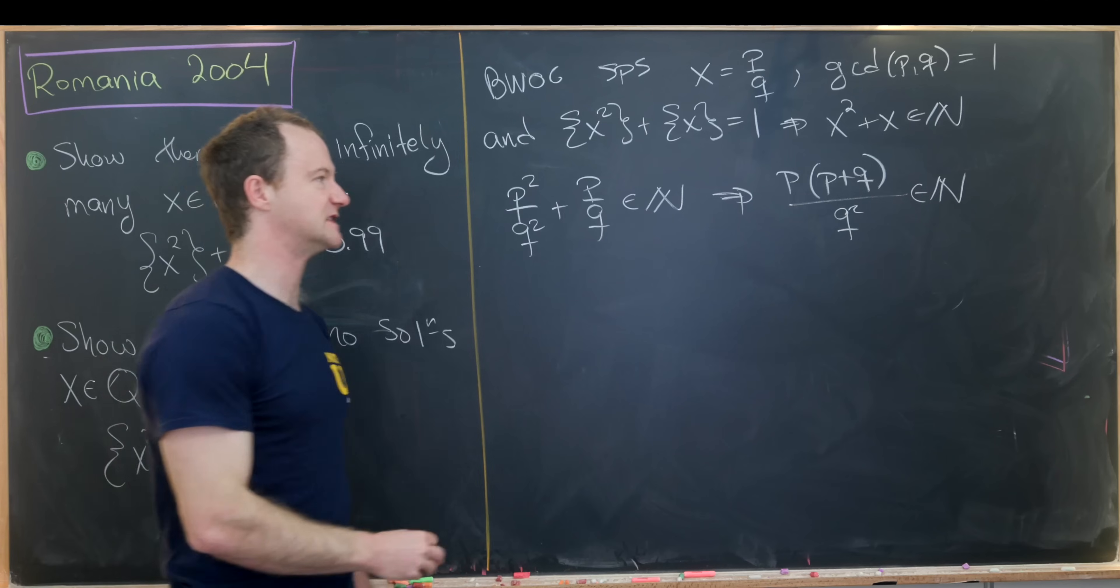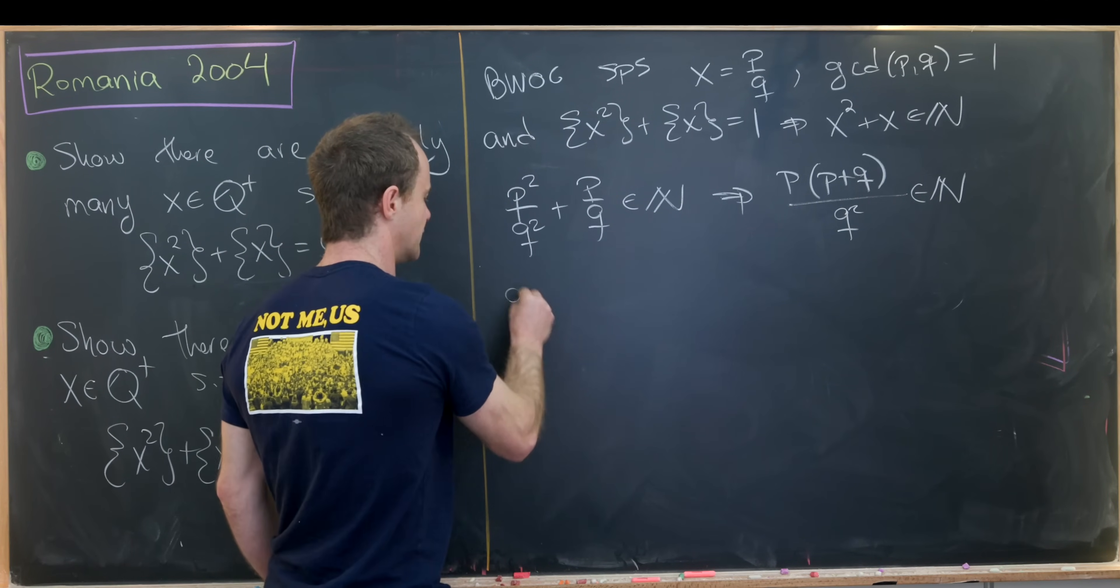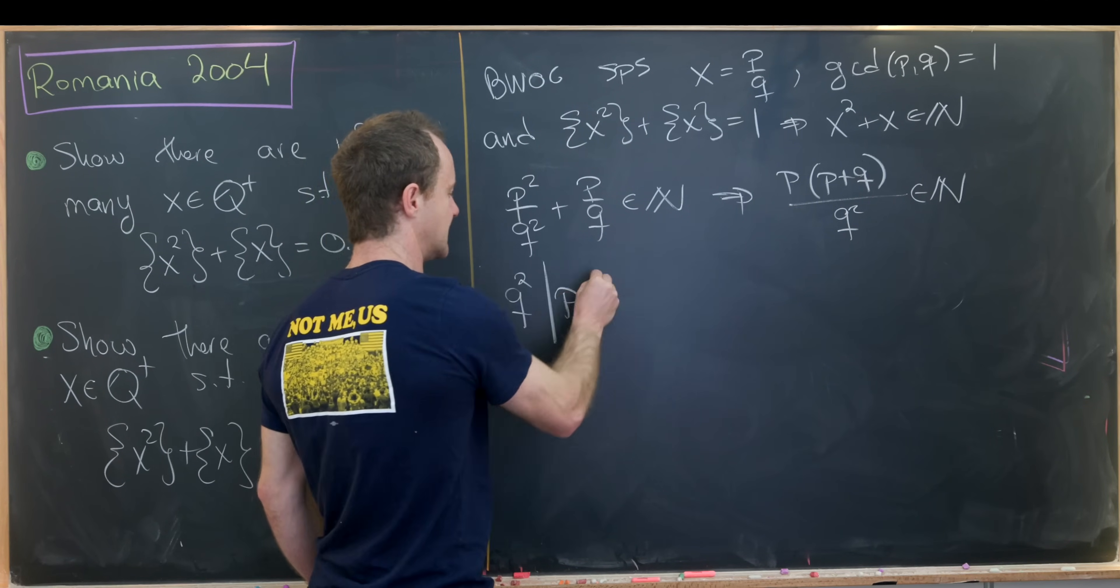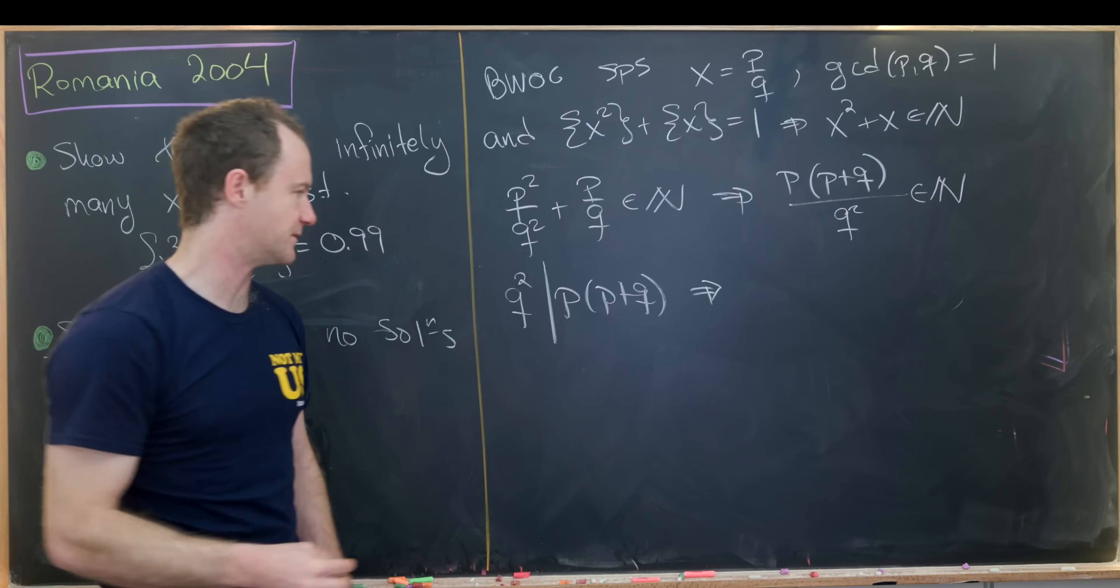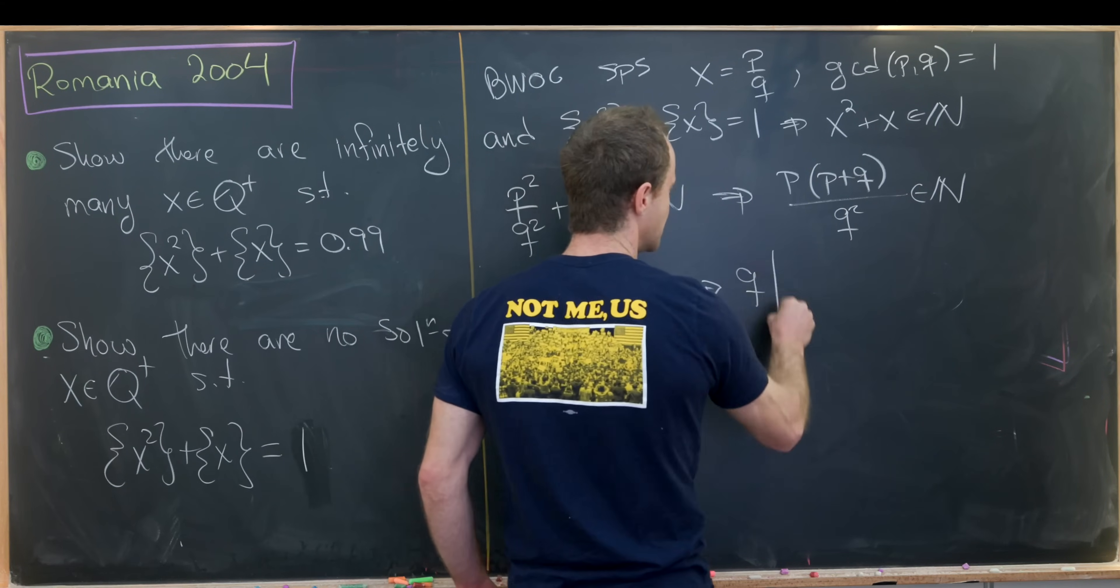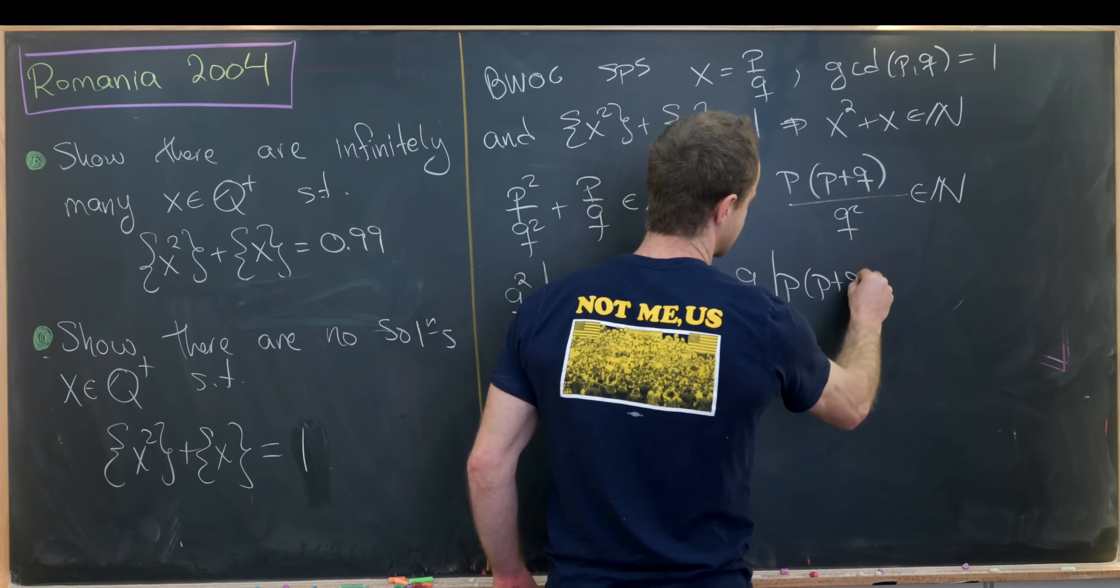Now we can make some divisibility arguments. Notice this means that q squared divides p times p plus q, but by the transitivity rule for divisibility, that means that q divides p times p plus q.